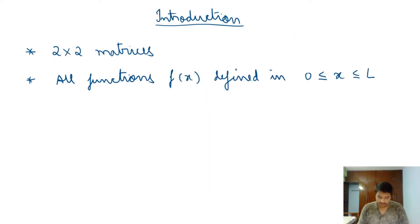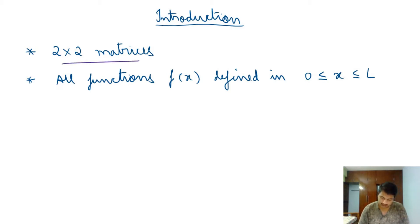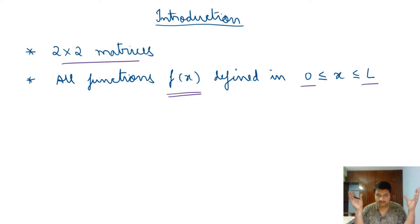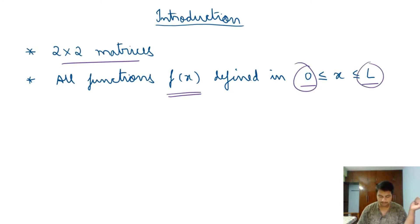In this video we are going to see two examples: the case of 2×2 matrices, and the set of all functions defined in the interval 0 to L. When I say all functions, I mean any possible functions you can think of, but only defined in the interval 0 to L.